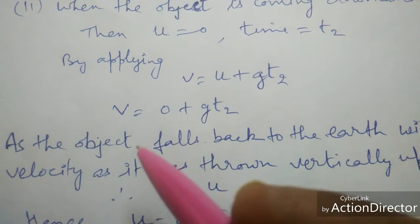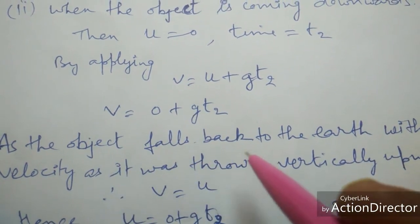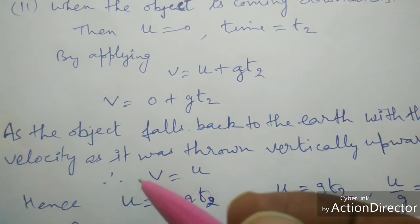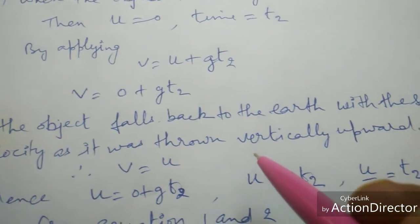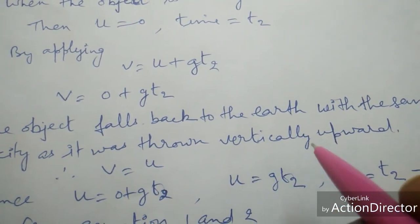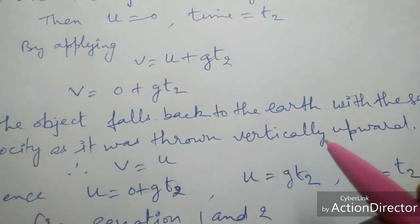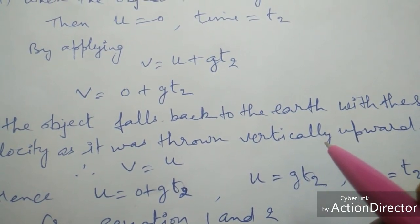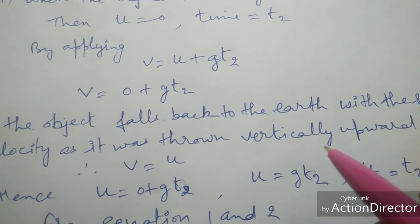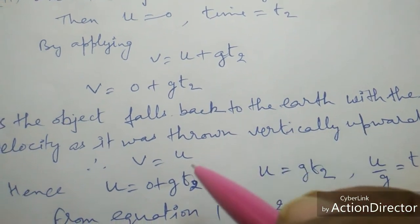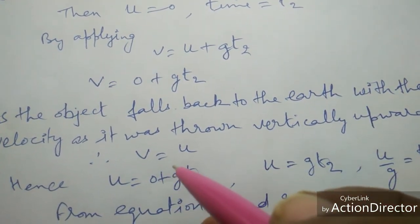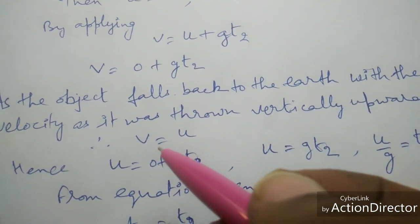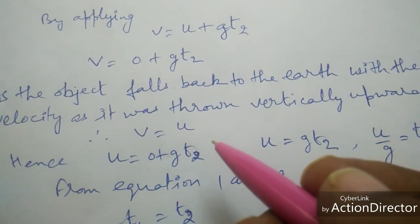We observe that an object falls back to the earth with the same velocity as it was thrown vertically upward. When we throw an object in the upward direction, it comes back with the same velocity. So the final velocity v will be equal to the initial velocity u.